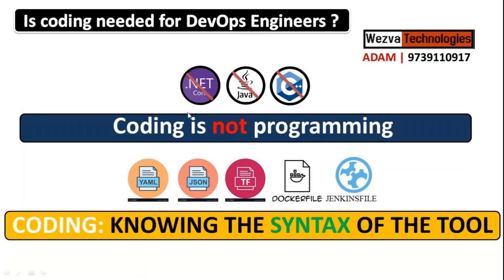Coding is all about writing some kind of syntax stored in a file — like a YAML file, a JSON file, or a Dockerfile. Docker uses a Dockerfile, Jenkins uses a Jenkinsfile, Terraform uses its own TF file with HCL code, Ansible uses a YAML file, Kubernetes uses a YAML file, Prometheus uses a YAML file. Every tool in DevOps has a syntax and a text file — that syntax is what we call code.